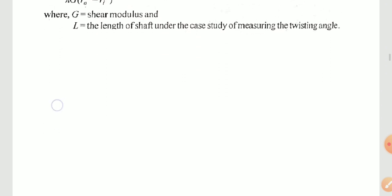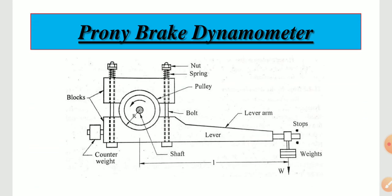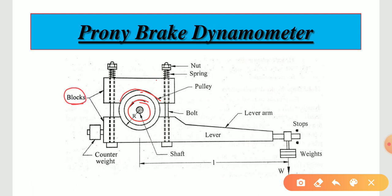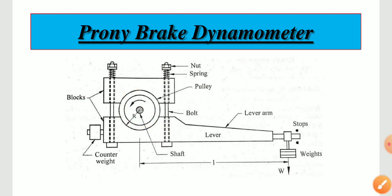Next is the prony brake dynamometer. This is an absorption type dynamometer in which the kinetic energy of the rotating shaft is converted into heat by friction between the brake drum or pulley and the friction element — block or band. The energy is converted from friction energy to heat energy. This dynamometer can be classified based on friction element as block type prony brake and band type prony brake dynamometer.